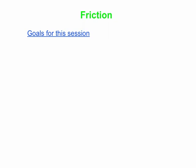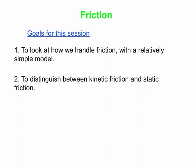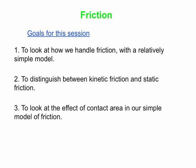Hi! Today we're going to talk about friction. My goals for this session: we're going to look at how we handle friction using a very simple model. We're going to distinguish between kinetic friction — friction associated with one object moving on another — and static friction, which is friction associated with an object at rest with respect to another one. We'll also look at the effect of contact area in our simple model of friction.